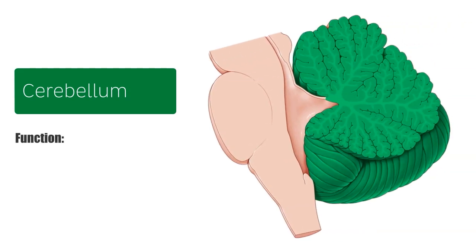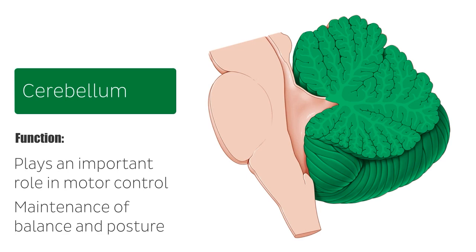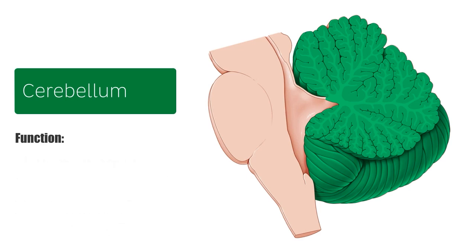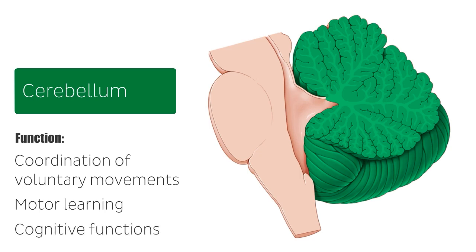The cerebellum plays many very important functions that we're going to talk about, but mainly it plays an important role in motor control. This structure does not initiate movement but rather modifies the motor commands of the descending pathways to make movements more adaptive and accurate. The cerebellum receives input from the sensory system of the spinal cord and other parts of the brain, then integrating these to fine-tune motor activity. The cerebellum is also involved in maintenance of balance and posture, and other functions include coordination of voluntary movements, motor learning, and cognitive functions such as language.